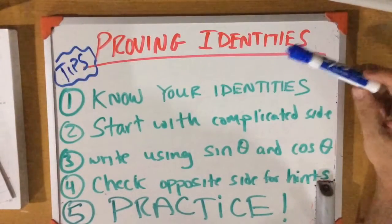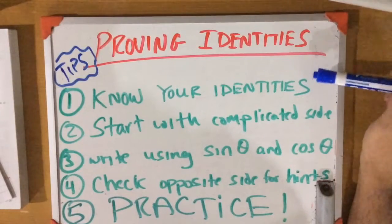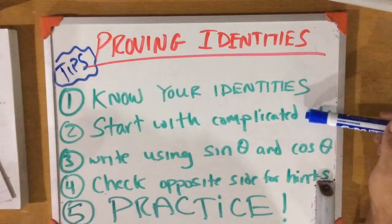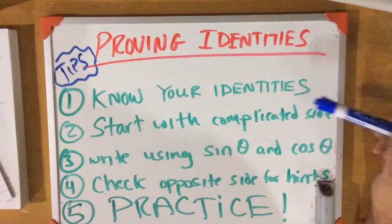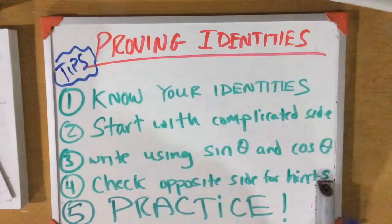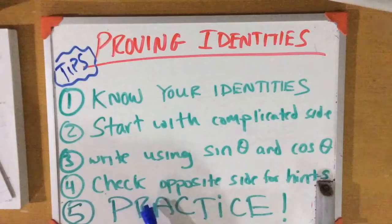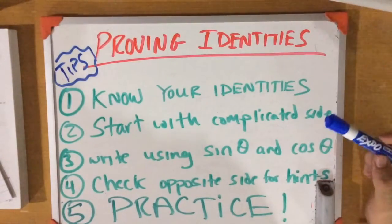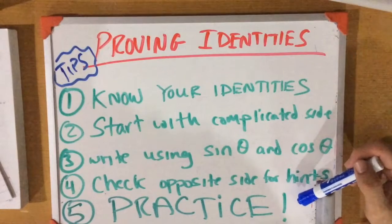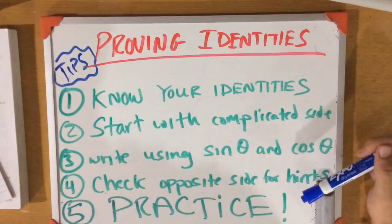Before the next examples, here are some tips to help with proving identities. Number one: know your identities and how to apply them — the more you practice, the better you get. Number two: start with the complicated side and work only that side. Number three: rewrite using sine and cosine as much as possible, since you know six trig ratios but using these two most often reveals the patterns. Number four: check the opposite side for hints step by step. Number five: practice, because identities sometimes require trial and error.